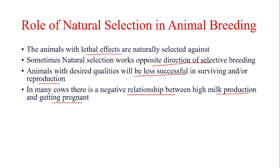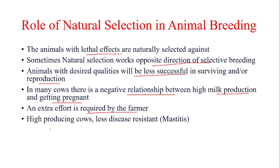These animals are producing too much milk, so they require a high amount of energy, and starting a reproductive cycle also requires a very high amount of energy. If the animal is not provided with the optimum amount of energy, it would not be able to start its reproductive cycle. So in this way, extra effort is required by farmers.